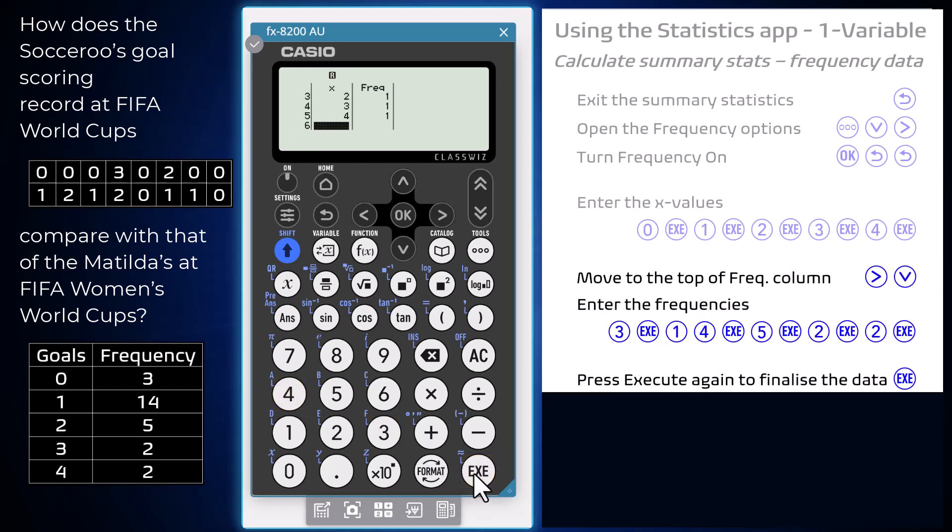Now to enter the frequencies, arrow across and make your way to the top of the frequencies column. To get there, you can arrow up repeatedly or arrow down just once.